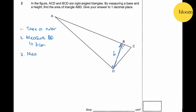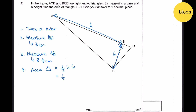Then we measure AB — this is the height, which gives us 8.4 cm. Therefore, area of a triangle is given by half times height times base: half times 8.4 times 3 = 4.2 times 3 = 12.6 cm².